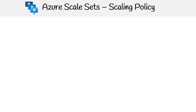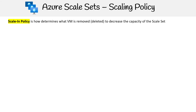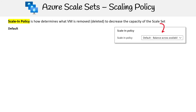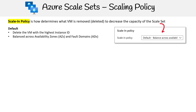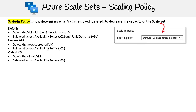There are a few other scaling policy options associated with the scale set. One is the scale-in policy — not to be confused with the scale-in option — which determines what virtual machine should be removed when you decrease capacity. It's a simple dropdown with a few options: the default deletes the VM with the highest instance ID while balancing across availability zones and fault domains; you can also delete the newest VM, which balances across availability zones only; or delete the oldest VM, which also balances across availability zones.